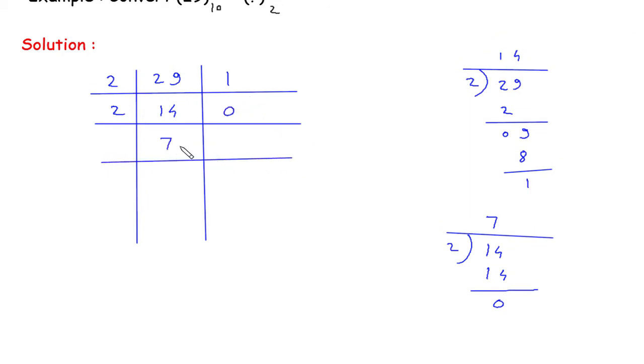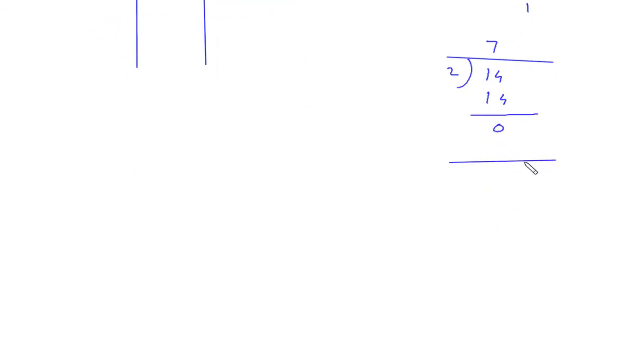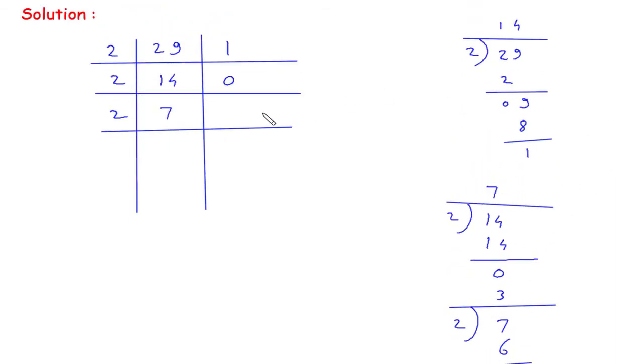We will again divide this 7 by 2. So this will be 7 divided by 2, so this will be 3, 6 and 1. The remainder is 1. So here we will write 1 and here we will write this 3.